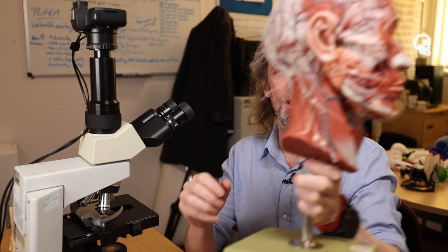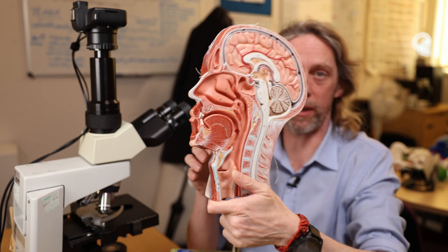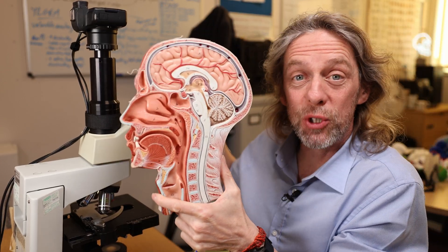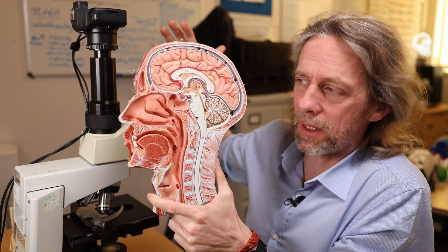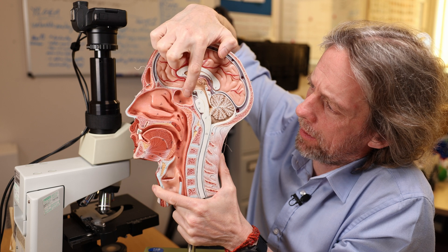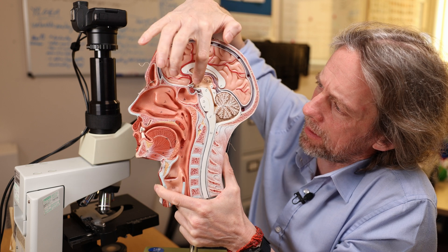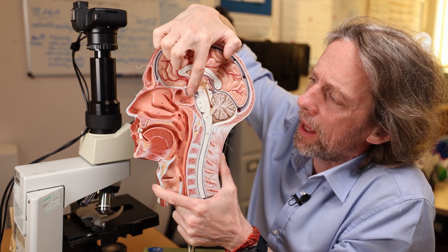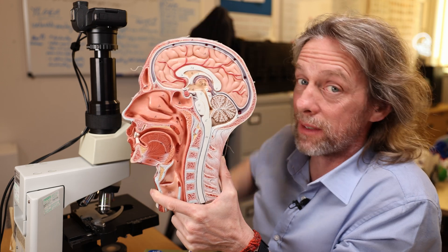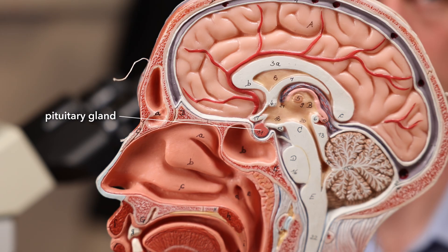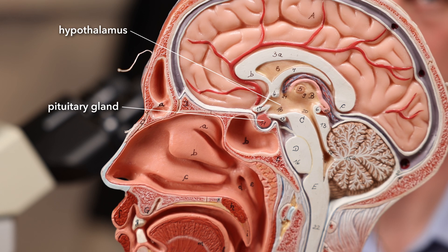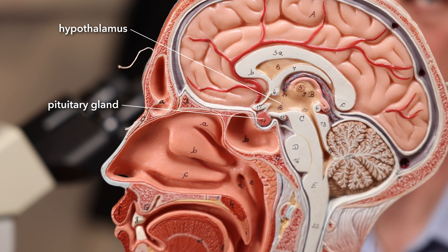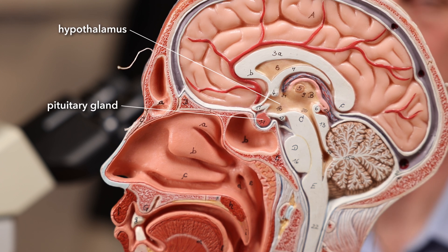The pituitary gland — the master gland — is hanging down from the brain. The hypothalamus is directly connected to the pituitary, as we shall see. It's an endocrine organ, so we want to look at its cells in some detail.